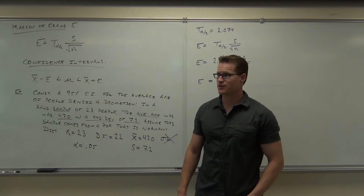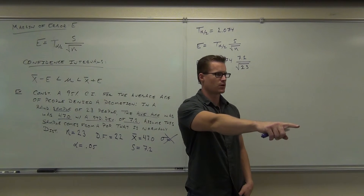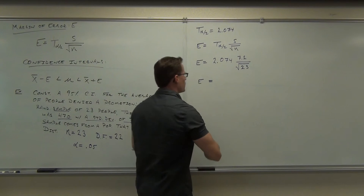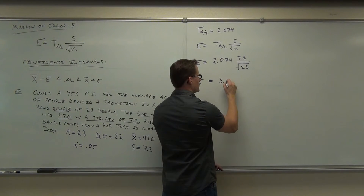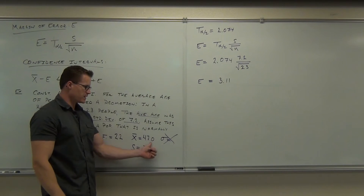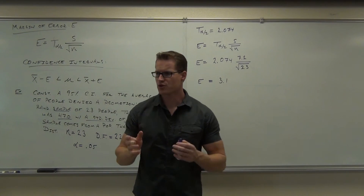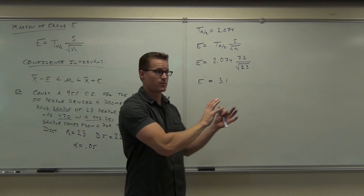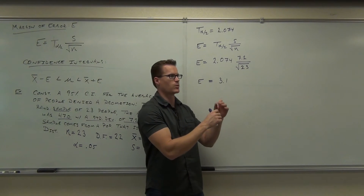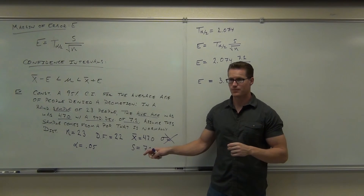Did you find it? How much did you get? 3.114. Is it okay that that's greater than 1? We're not dealing with proportions anymore, so it doesn't matter. Let's round to 3.1, because our mean is given in tenths. We're talking about years here — 3.1 years is fine enough. We don't need 3.114 years. Give E to the same precision as your average.